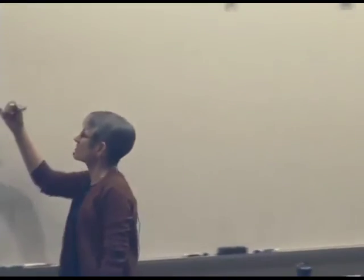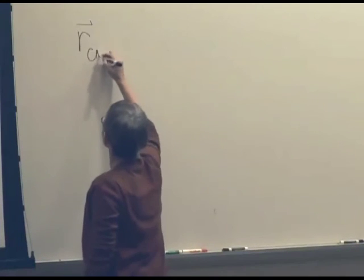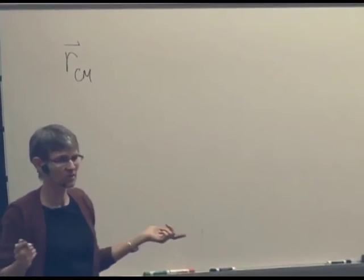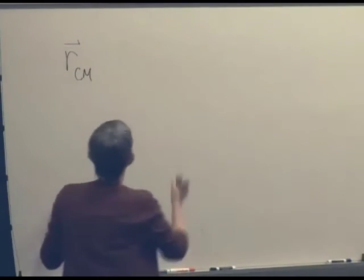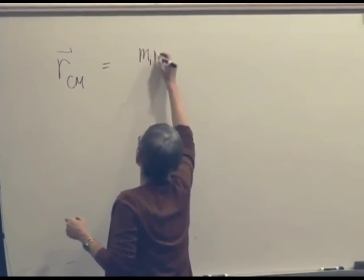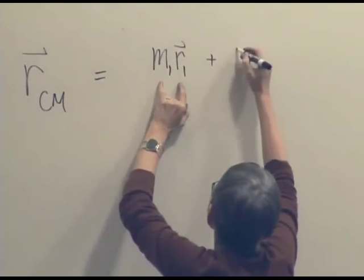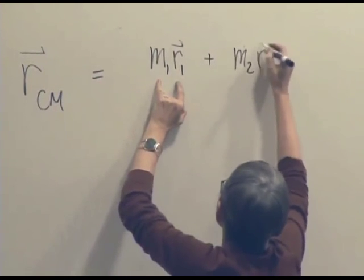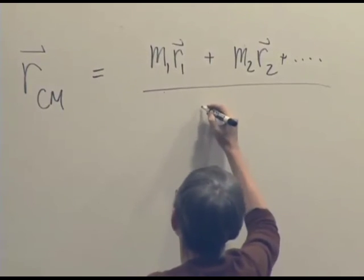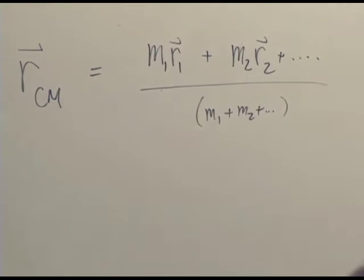The term center of mass actually has a real mathematical definition. R is always a position, so the position of the center of mass of some system relative to some origin can be found by adding up the position of object one times its mass, plus the position of object two times its mass, plus whatever, divided by the total mass of the whole system. Let's just see what this would mean.